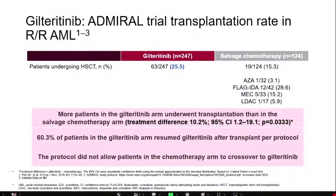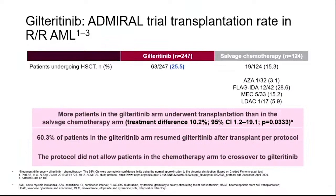Two important points: more patients in the giltretinib group underwent stem cell transplant compared to the salvage group — 25% versus 15%, about a 10% difference — raising the question of whether the survival benefit was due to more transplants or the drug itself. Additionally, 60% of patients resumed giltretinib post-transplant, raising the question of whether resuming giltretinib post-transplant made a difference — but since this was not planned, it is a post-hoc analysis.